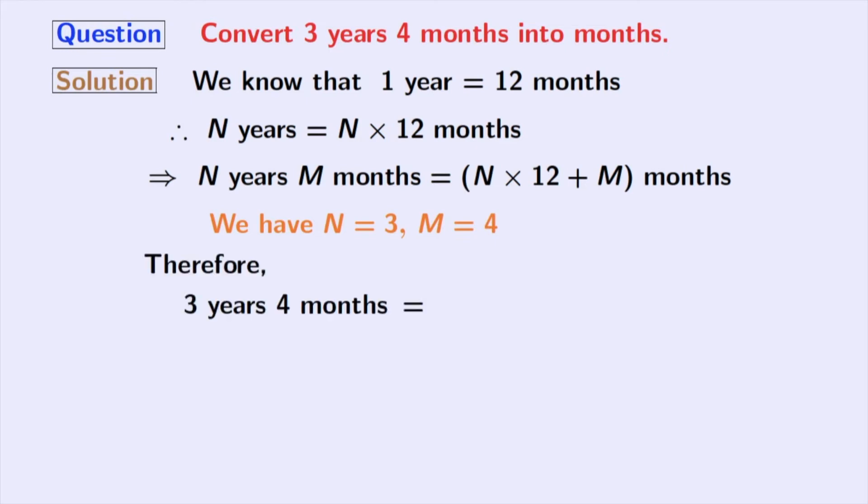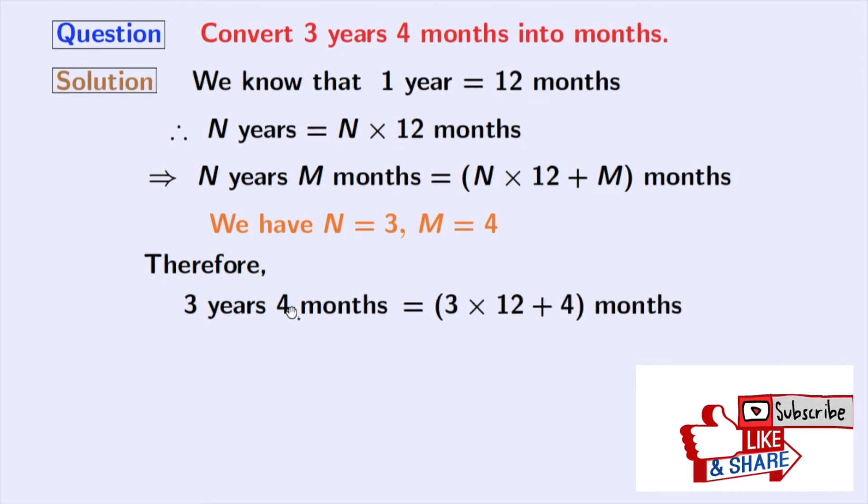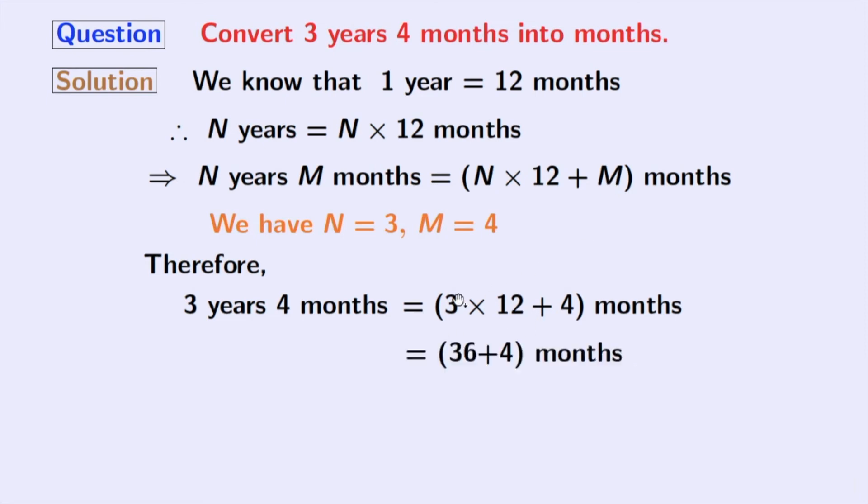we get 3 years, 4 months is equal to 3 times 12 plus 4 months. If we simplify this, we get 36 plus 4 months, which is equal to 40 months. So finally, 3 years, 4 months is equal to 40 months.